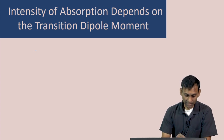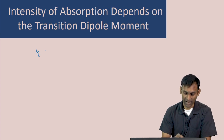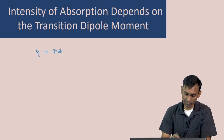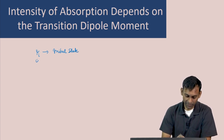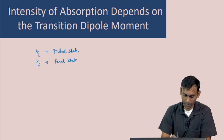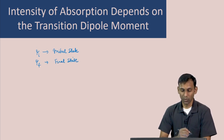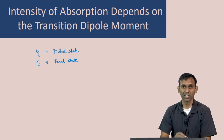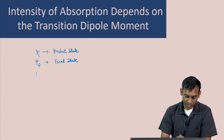Assume that the molecule is in a state ψ_i — this is the initial state of the molecule. And let us say φ_f is the final state of the molecule. The transition dipole moment is defined in terms of these initial and final states and one more quantity, which is the dipole moment operator.